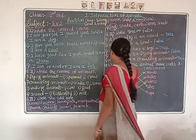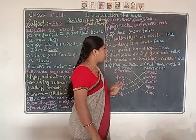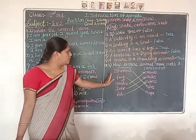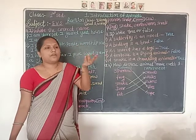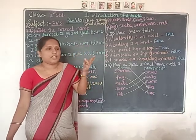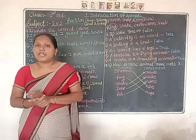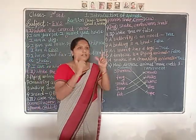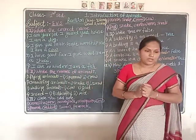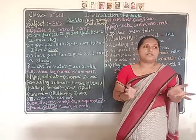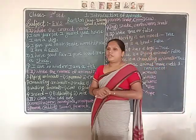Next question: how do these animals move? Match it. If they are birds, they will fly. If they are wild or domestic animals, they will walk. If they are insects, they will also fly — they are small in size. If they are water animals, they will swim in water — they can't fly or walk on roads.